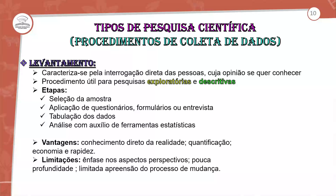Os tipos de pesquisa e procedimentos de coleta de dados — levantamento — são caracterizados pela interrogação direta da pessoa cuja opinião se quer conhecer. É um procedimento útil para pesquisa exploratória e descritiva. Tem etapas: seleção da amostra, aplicação de questionário, formulário ou entrevista, tabulação dos dados e análise com auxílio de ferramenta estatística. É uma forma de pesquisa qualitativa. Vantagens: conhece a realidade, qualificação econômica e rapidez. Limitações: ênfase em aspectos de pouca profundidade, por ser mais subjetiva.